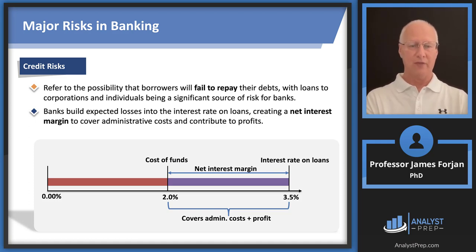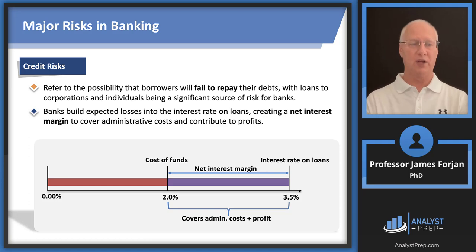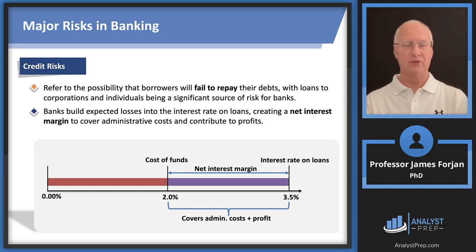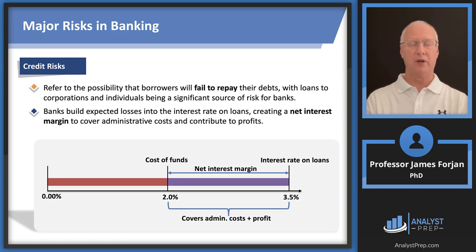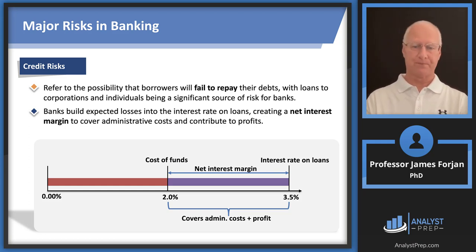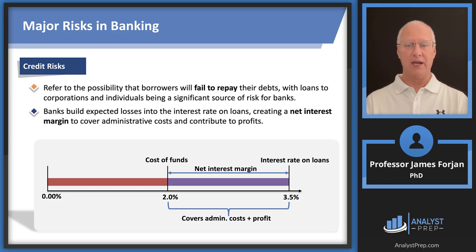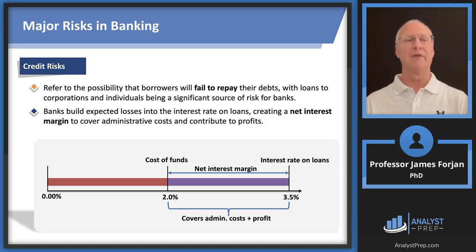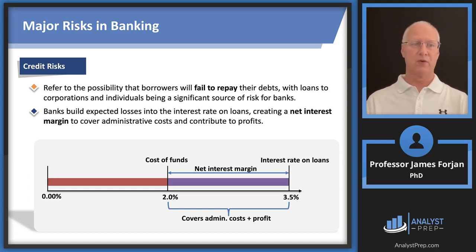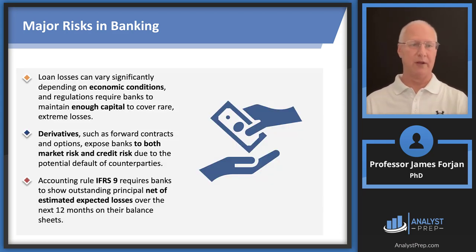The cost of funds — say 2% in this example — reflects essentially the credit risk of the borrower. The credit risk of the borrower depends on the ability of that borrower to repay. We then need to add a premium to that interest rate to cover administrative costs and a required return on investment — the chapter calls this profit. So if our cost of funds is 2% but we're generating 3.5%, that's the net interest margin. If you just remember this illustration, you'll be able to answer those questions.